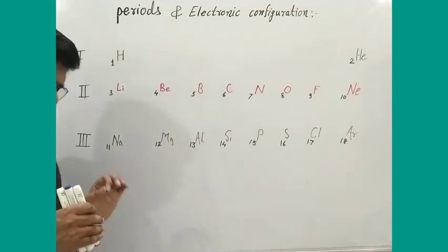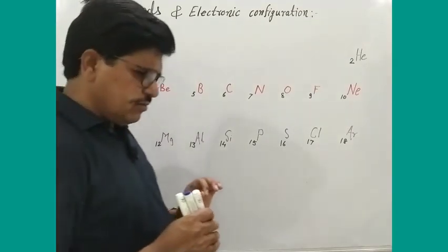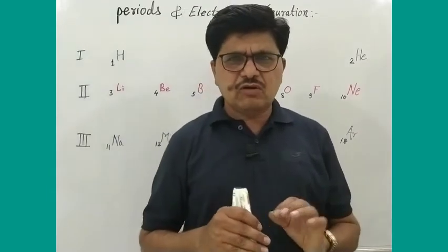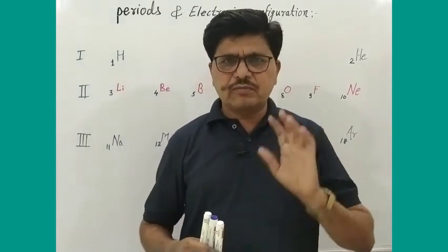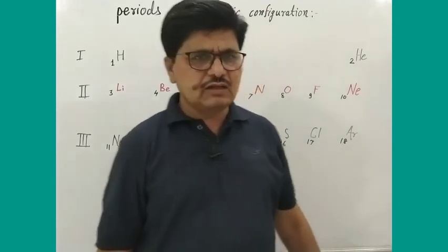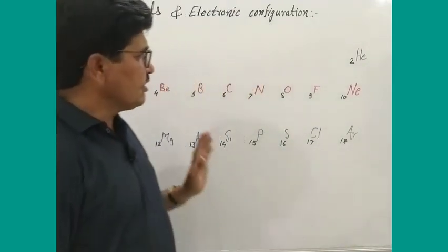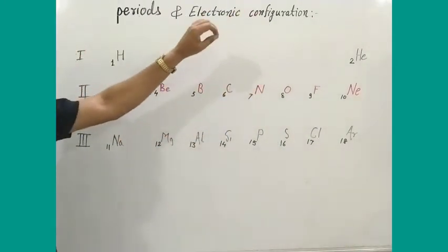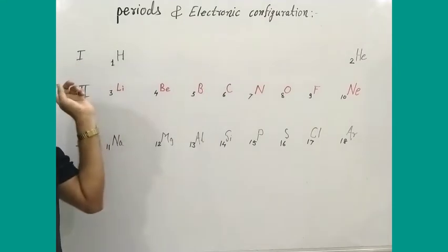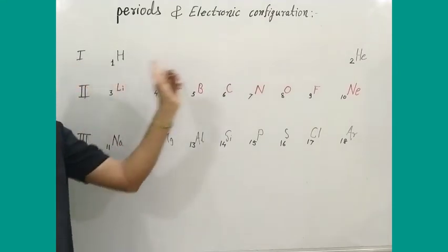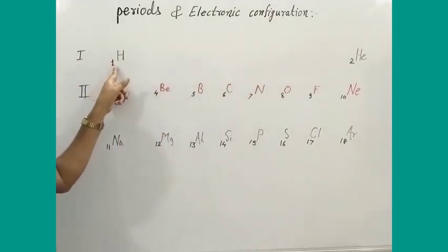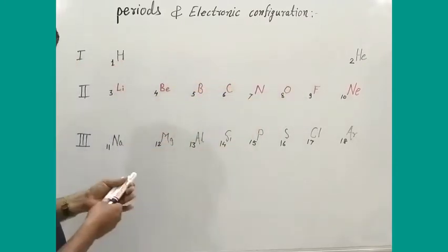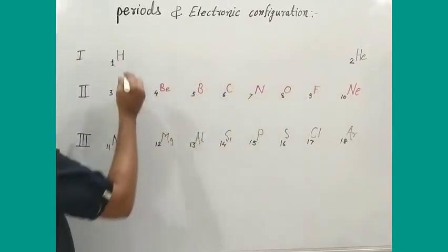We write the atomic number of each element. When modern scientists arranged the elements in the modern periodic table, they arranged elements in increasing order of their atomic number. Hydrogen has atomic number one and helium has atomic number two.